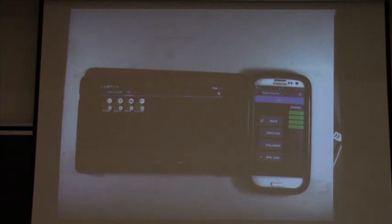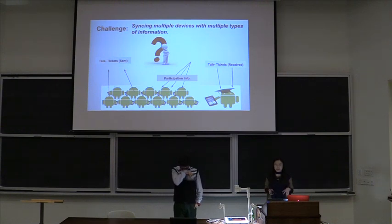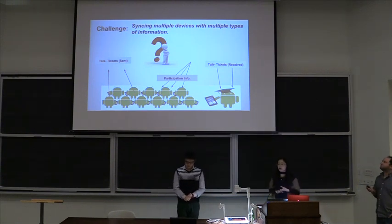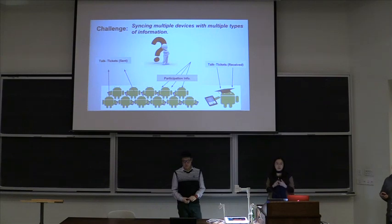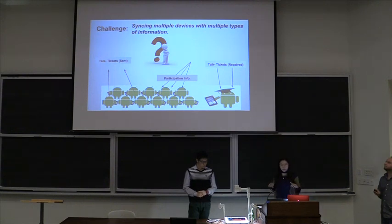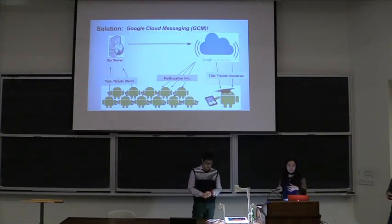One big challenge we faced was how to synchronize multiple devices with multiple types of information. We had two different types of content to transmit via the cloud: first, the tickets from student to teacher; and second, the participation information from the cloud to student. Our app also needs to keep pace in a fast-moving classroom. Without the ability to synchronize multiple devices in real time, our app would essentially be useless. We found Google Cloud Messaging and successfully applied it to solve this major problem.